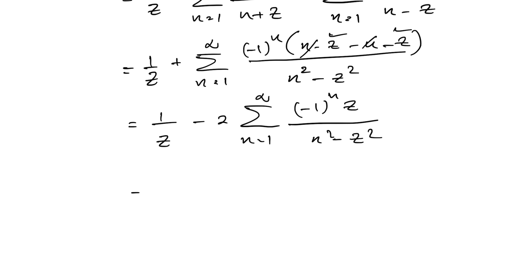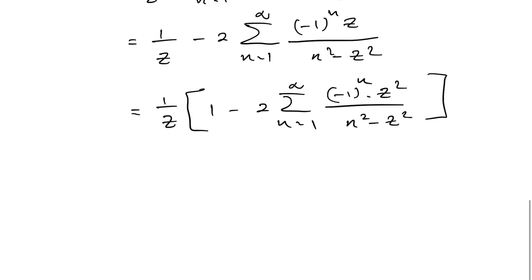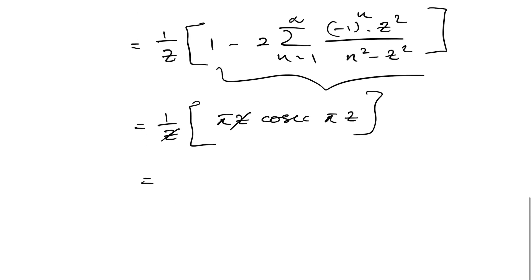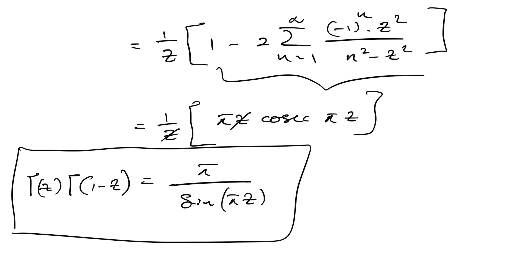Factoring out 1/c, we recognize the familiar Fourier series representation of π·csc(πc): we have (1/c) times (1 minus 2 times the sum from n=1 to infinity of (-1)^n · c² over (n² - c²)), which equals π·csc(πc) / c. After cancellation, gamma(c)·gamma(1-c) = π / sin(πc). This completes the proof of Euler's reflection formula. Thank you for watching.